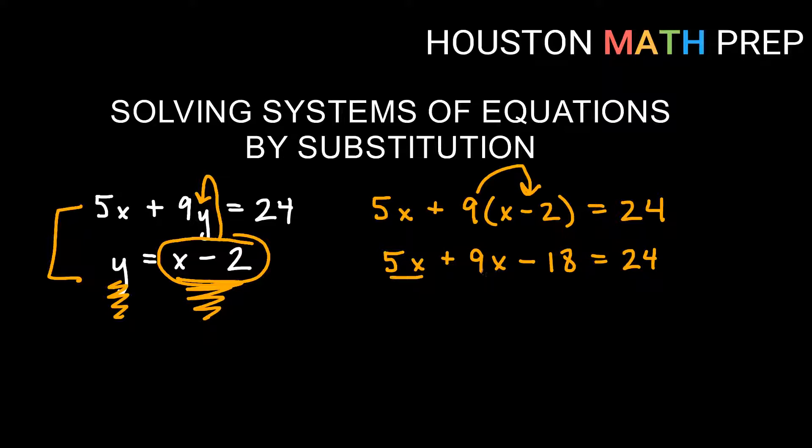I have some like terms I can combine here. So 5x plus 9x will give me 14x minus 18 equal to 24. And now this is just a linear equation with one variable and so we just do our steps like we normally would to solve. So we'll add 18 to get the x term by itself first. Do it on both sides and that'll give us 14x. 24 plus 18 will be 42.